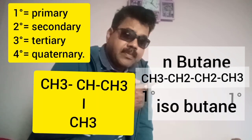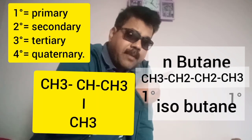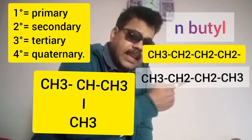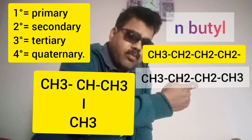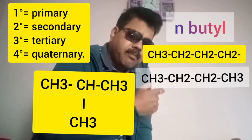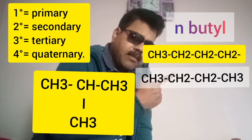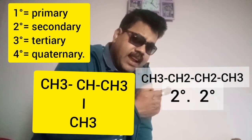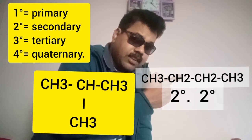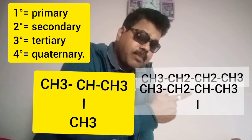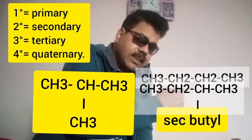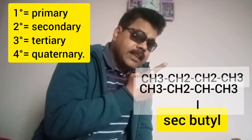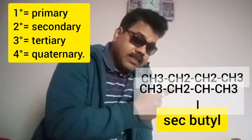In case of n-butane, if you remove a primary hydrogen atom you will get CH3-CH2-CH2-CH2 bond — that is n-butyl. You can remove that hydrogen from the other side also, but the same n-butyl will be obtained. If you remove a secondary hydrogen atom from any of the secondary carbon atoms, you will be getting sec-butyl: CH3-CH2-CH bond-CH3. Sec-butyl means the hydrogen atom from n-butane is removed from a secondary carbon atom.